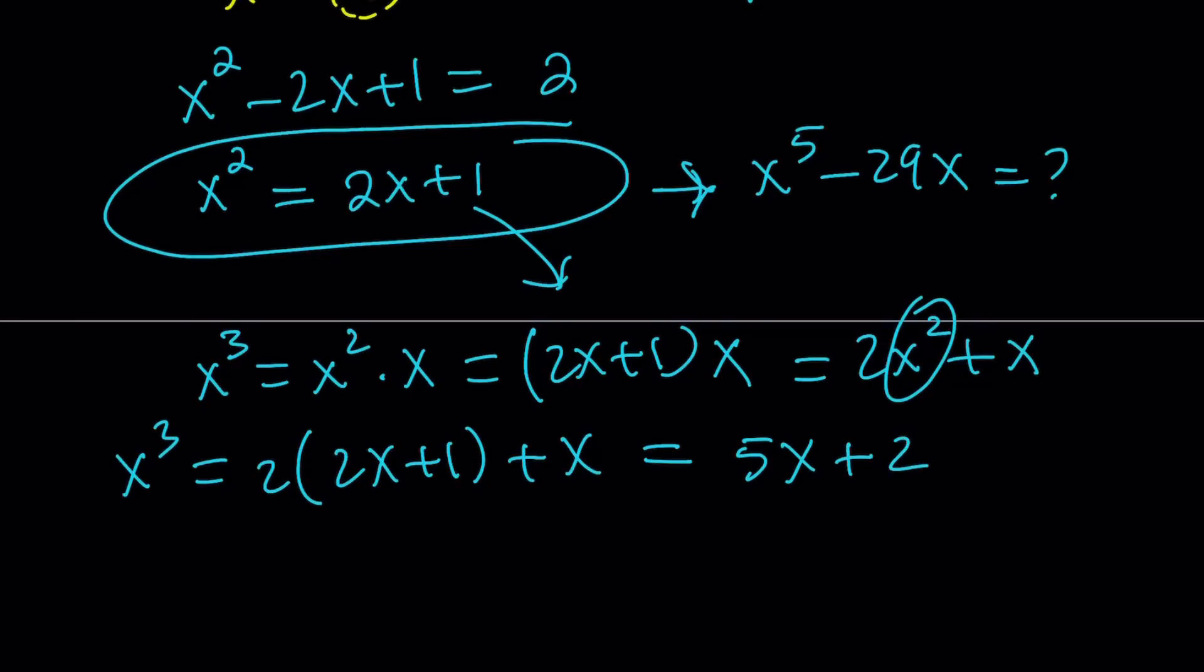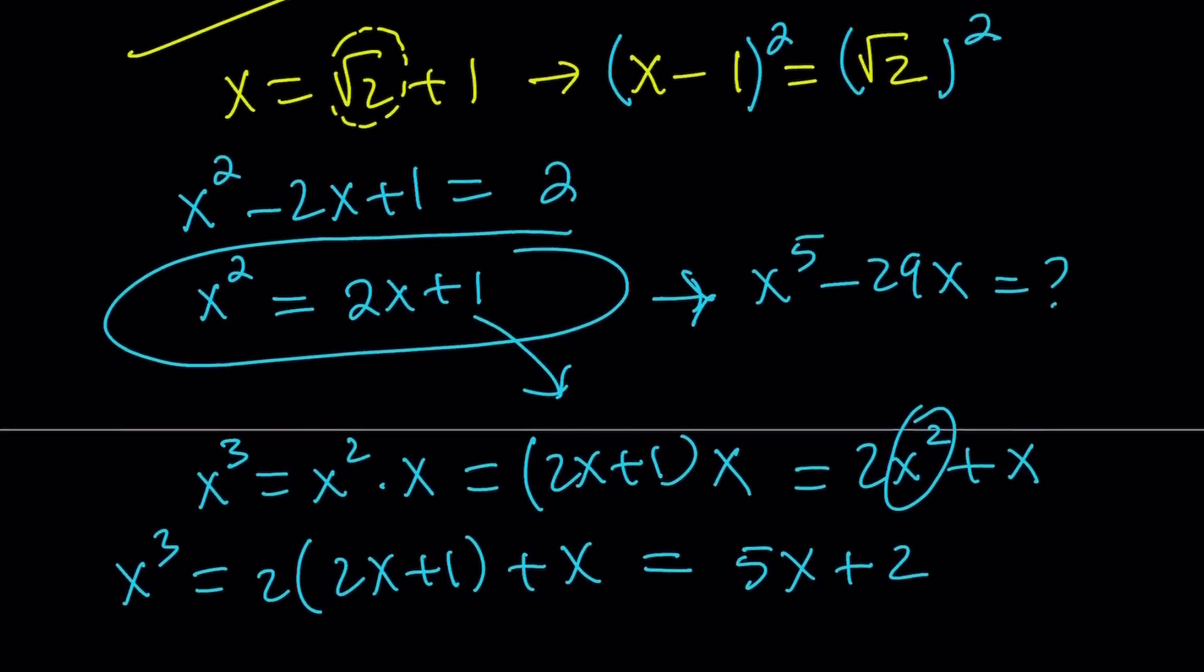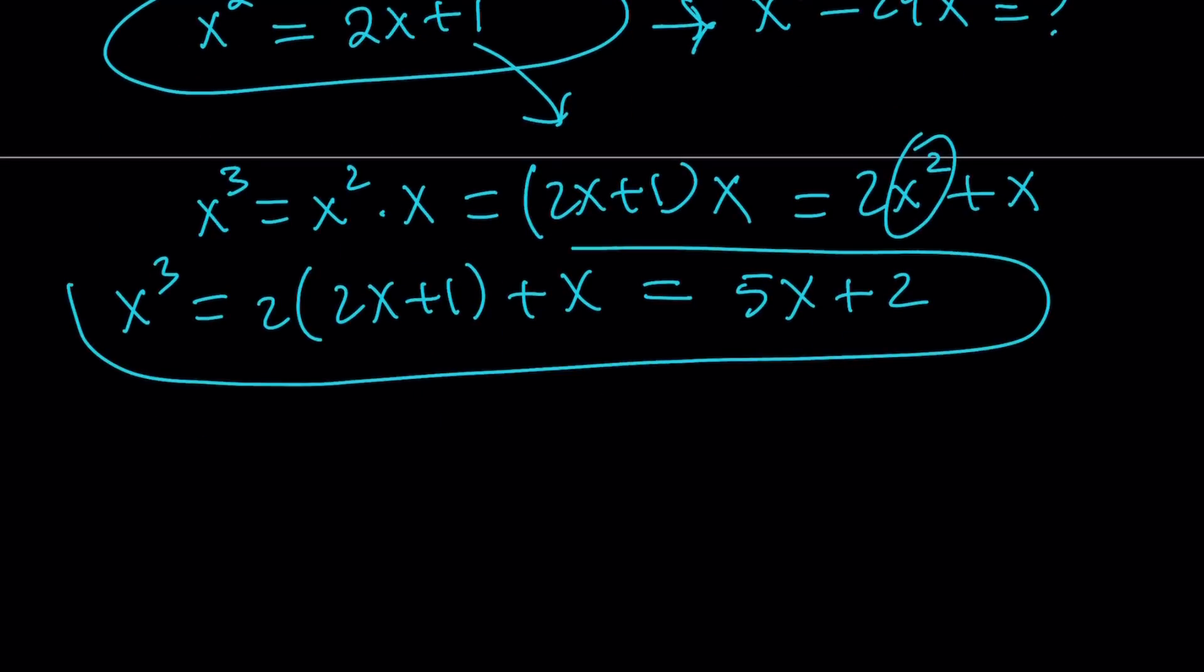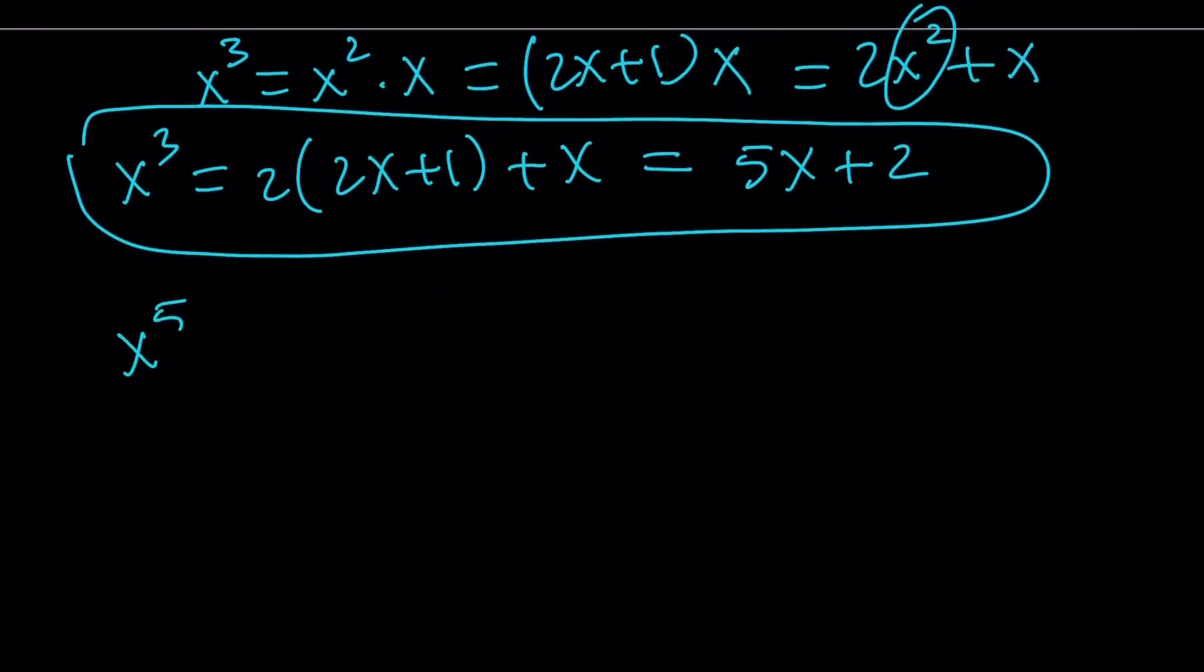So, we got an expression for x^3. And x^2, we do have an expression for x^2. So, why not multiply those together to get x^5? x^5 is x^3 times x^2.